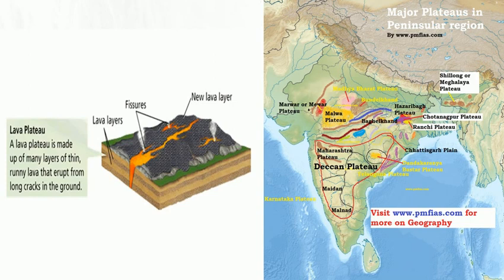The total thickness and area covered by lava plateaus is very extensive. The main examples are the Deccan Plateau and the Malwa Plateau of India, which are the result of fissure flows. The Columbia Plateau in northwestern USA is also a lava plateau.